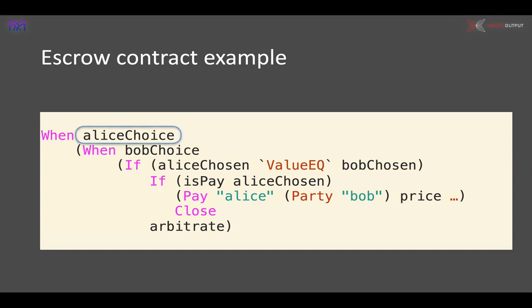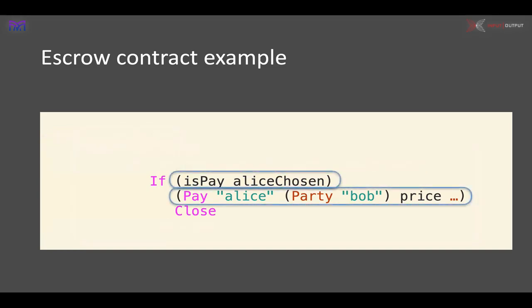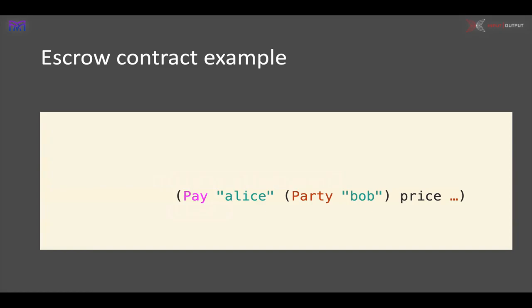To run through in a bit more detail: the 'when' waits for something to happen, in this case a choice from Alice, and when that choice has happened it does what the rest of the contract says. The 'if' checks whether the choice Alice made was to make a payment — if it is, the payment goes from Alice to Bob; if not, we close the contract. Right at the heart of these things are payments being made from one person to another. Next we'll step back and look at how we might have to adapt this when we move into the world of blockchain.